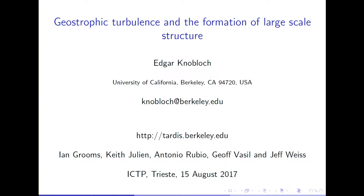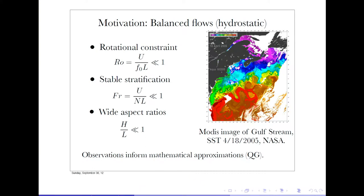Keith Julian is my co-PI on this project. This is the motivation for our work. We're interested in studying large-scale structures in the Earth. This is the standard kind of problem that is described by the equations of quasi-geostrophy that we heard about in the previous talk. Here is the eastern seaboard of the United States.